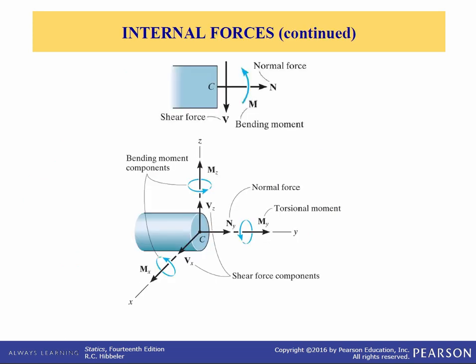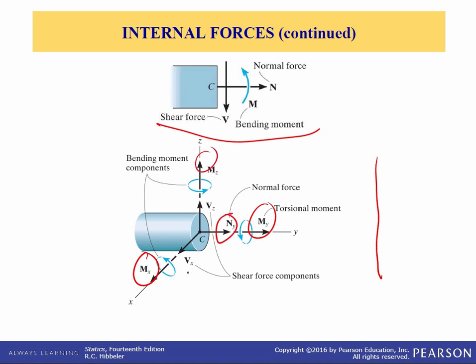In two dimensions, three internal loading resultants exist. However, in three dimensions, a general resultant internal force and couple moment will act at the section. The X, Y, and Z components include three bending moments — one about each axis — one normal force, and two shear force components. We're not going to be doing three-dimensional internal force calculations in this class, but it's good to know.